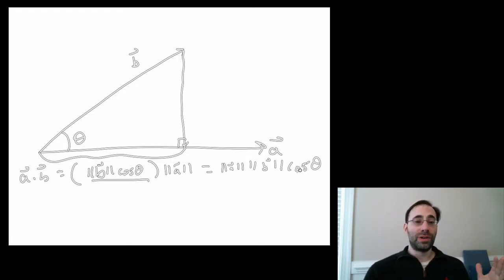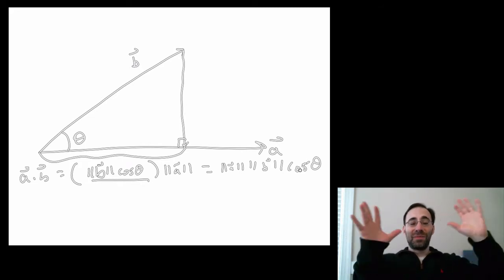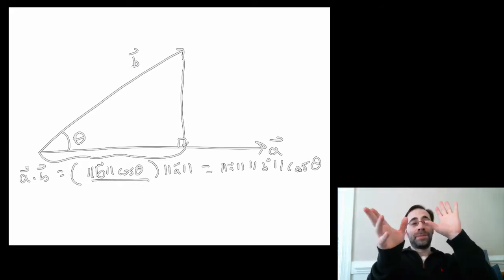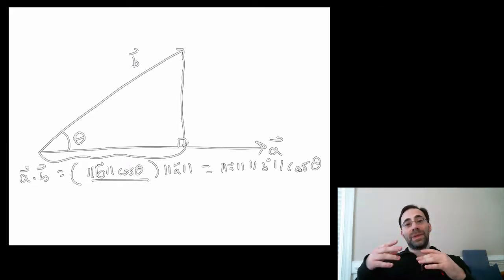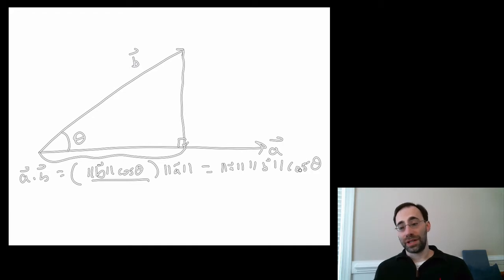In general, that's true, too, in more than two dimensions. If you could imagine a vector in more than two dimensions, you know, rotating around, the projection of one on the other is what we're looking for when we deal with the dot product.